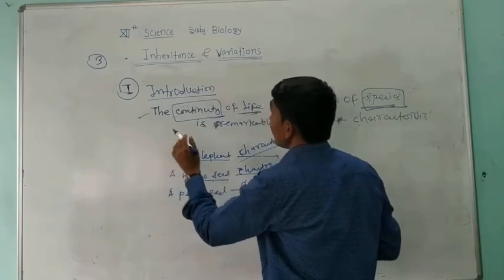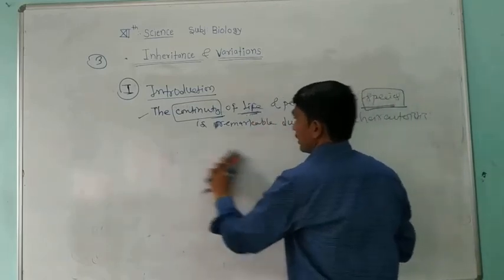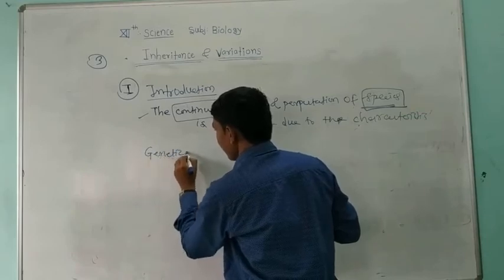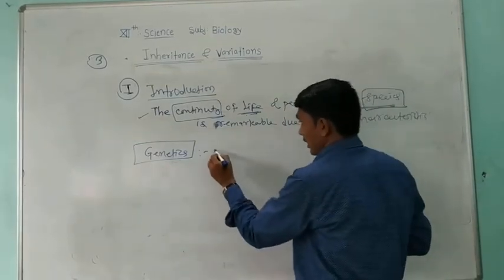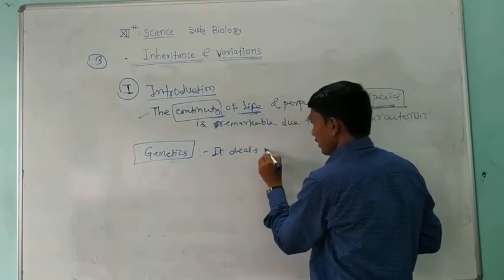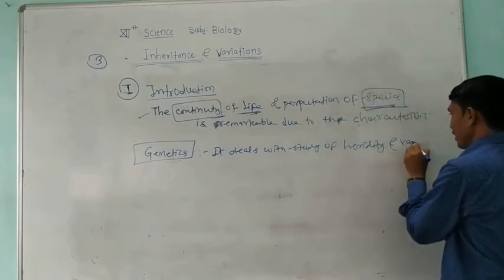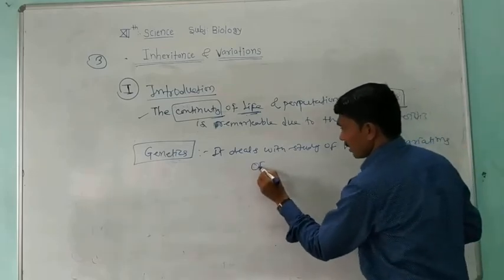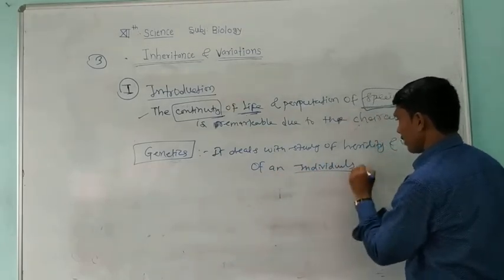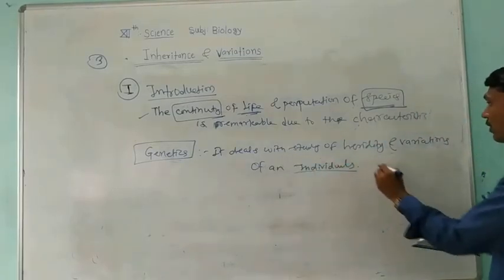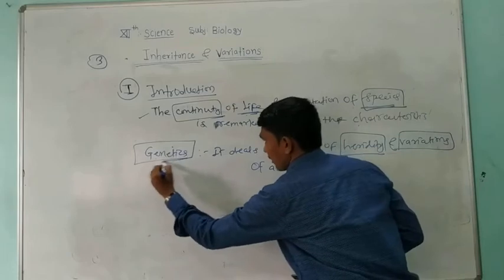The first important terminology related to Inheritance and Variation is Genetics. Genetics is the branch of biology that deals with the study of heredity and variation of an individual. That is the definition — the branch of biology that deals with the study of heredity and variation of an individual is called Genetics.